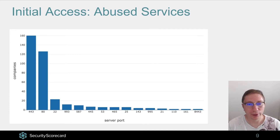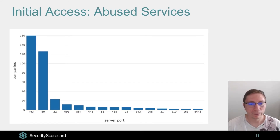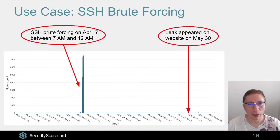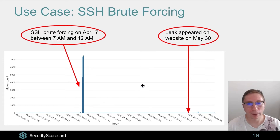Next, we looked at abuse services. We defined an abuse service as a service that for a short period of time has considerably more requests than usual — specifically, at least five times more requests than the 95th percentile. We found that HTTPS, HTTP, and SSH were in the first three places. Here we have an interesting example of SSH brute forcing where, for approximately five hours, it looks like a brute force was tried on an SSH server for a particular company, and later — after one and a half months — that company appeared on a ransomware leak website.